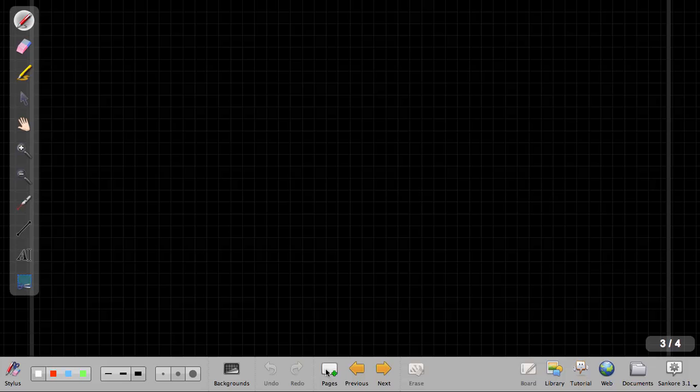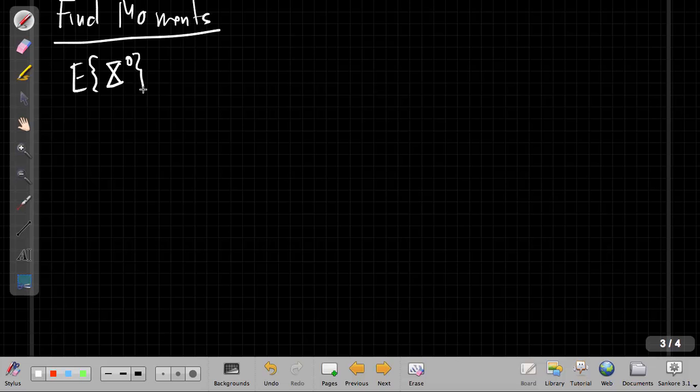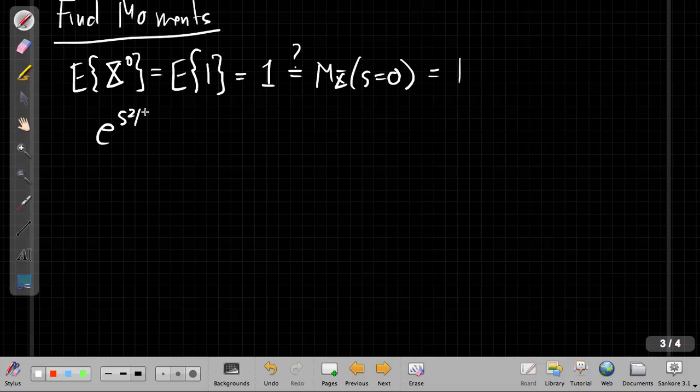So let's move to a new page and see how we can find the moments. The moment generating function—well, a good sanity check for any time I compute a moment generating function, I start out by saying, well the 0th moment, anything to the 0 is 1, so I better make sure that what I got with no derivatives just evaluated at s equals 0 is that equal to 1. And so I can say, well e to the s squared over 2, evaluated at s equals 0, is e to the 0, which is 1. So that's a good sanity check. I often do that just when I've computed a new moment generating function I haven't done before to make sure I didn't make a dumb calculus mistake.